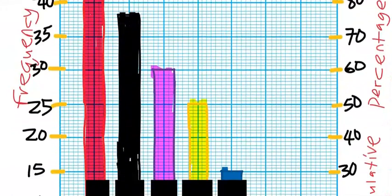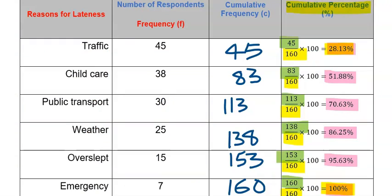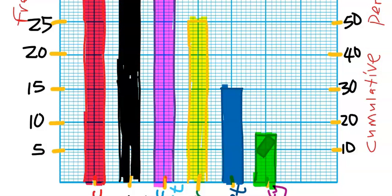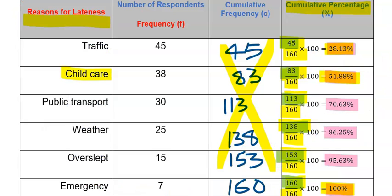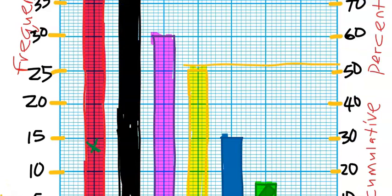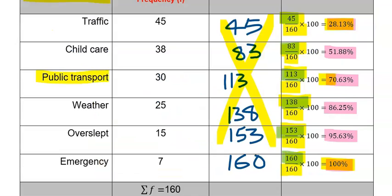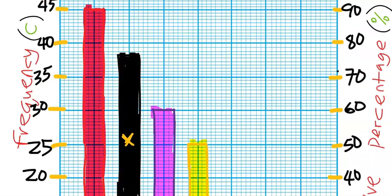Having completed the bar chart, next is to plot the cumulative percentage against reasons for lateness. For the cumulative frequency column, it's not needed for the graph. However, it was a vital column to enable us to get the cumulative frequencies for the cumulative percentage. Hence, we start with the traffic, and we have here as 28.13. 28.13 is somewhere here, and we trace it straight to this point. Hence, we are going to mark this on the traffic bar. Next, childcare is 51.88. 51.88 is here, trace it straight to childcare. Hence, we mark this point on the bar of childcare. Next, is public transport, which is 70.63. 70.63 is here, and we trace it straight until we get here, and we mark out the points, which have to be above the public transport.